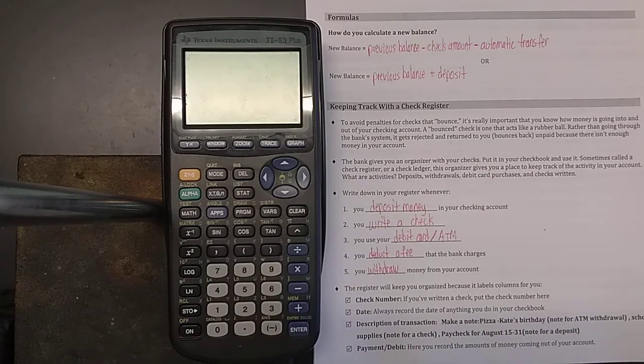Now the nice thing about a check register, and we'll see this in a second, is that it labels all these different columns for you. And these different columns are where you record what type of transaction it was, how much money came in and out, and what your new balance is. There's a column for check number so that you can keep track of which checks you've used. There's a column for date so that you can record when these things happened. A description of the transaction.